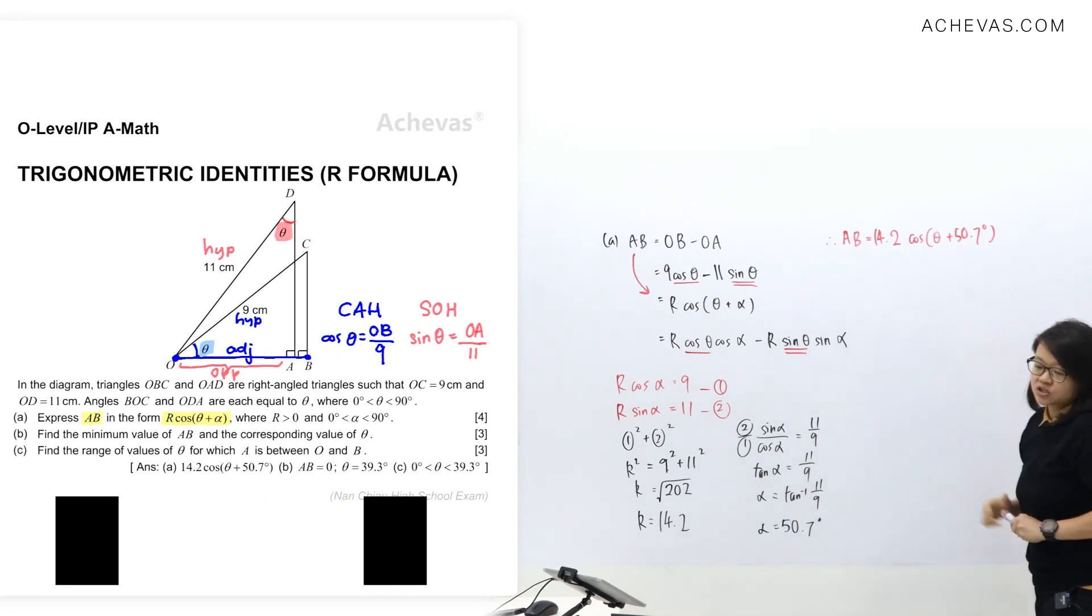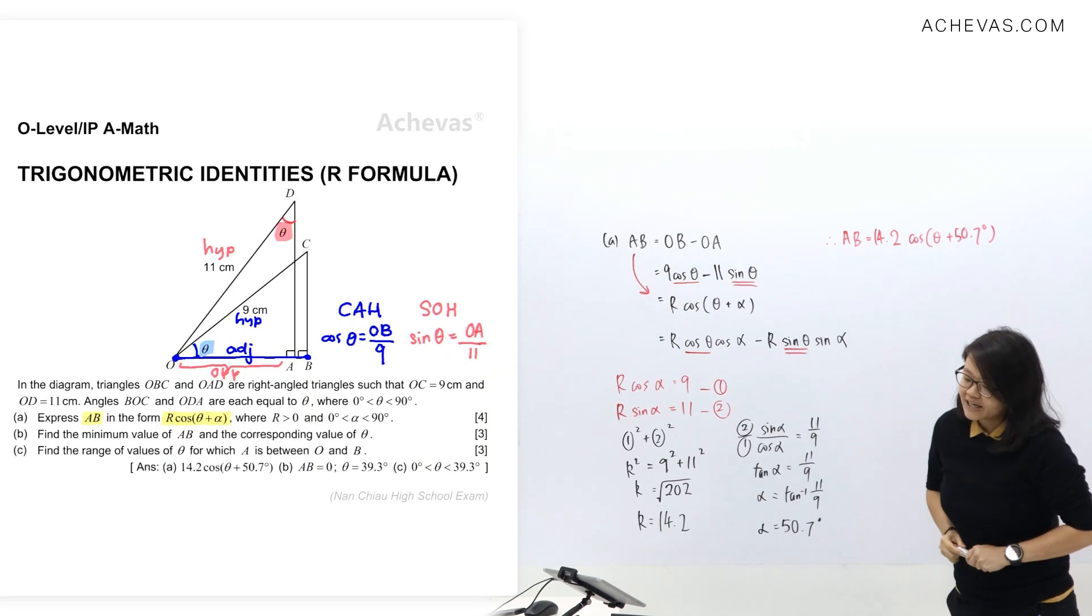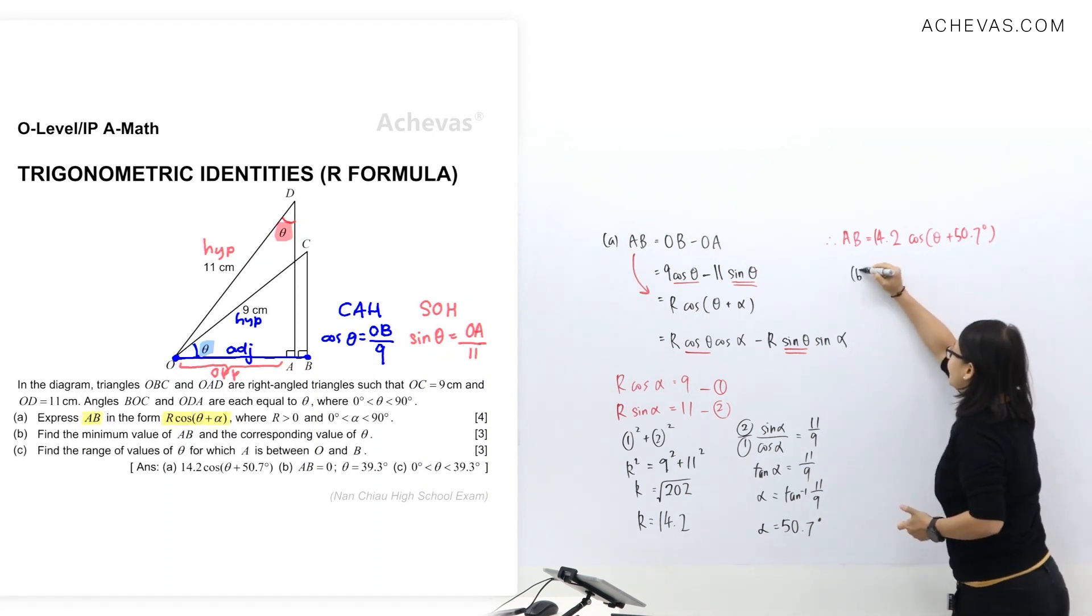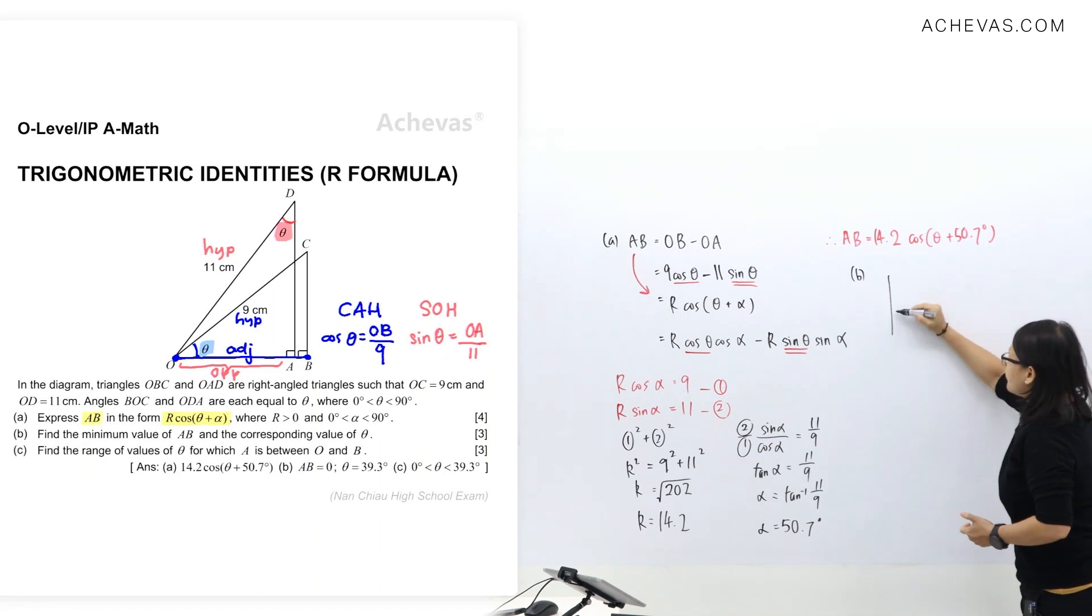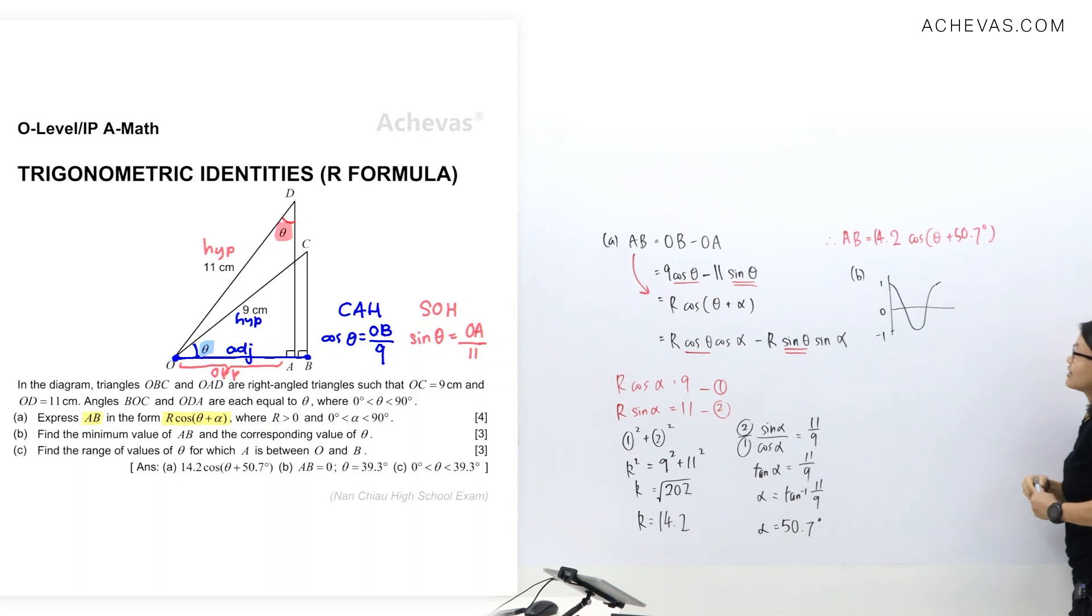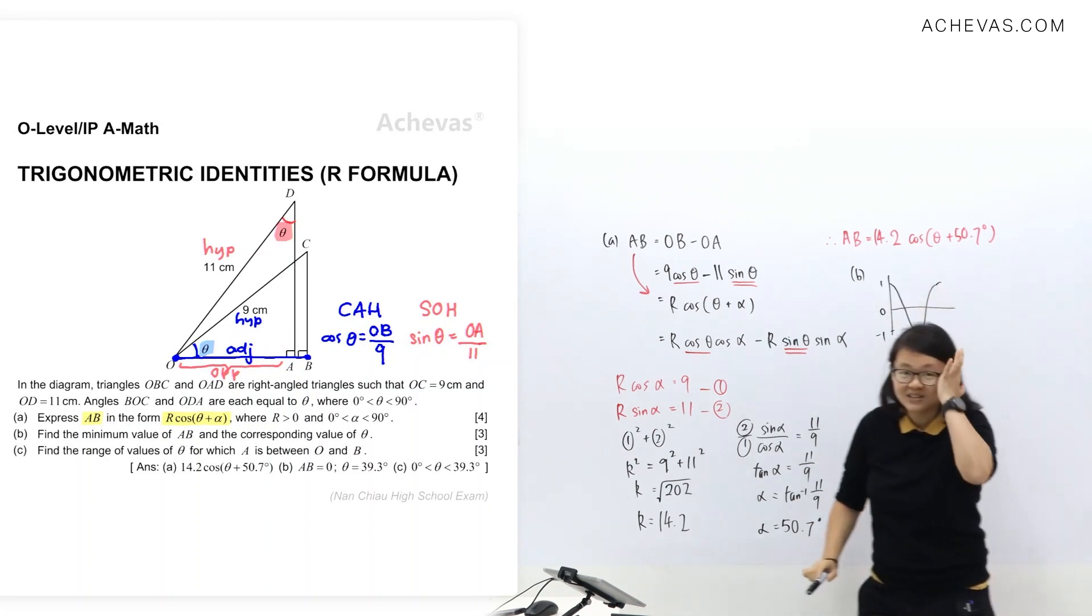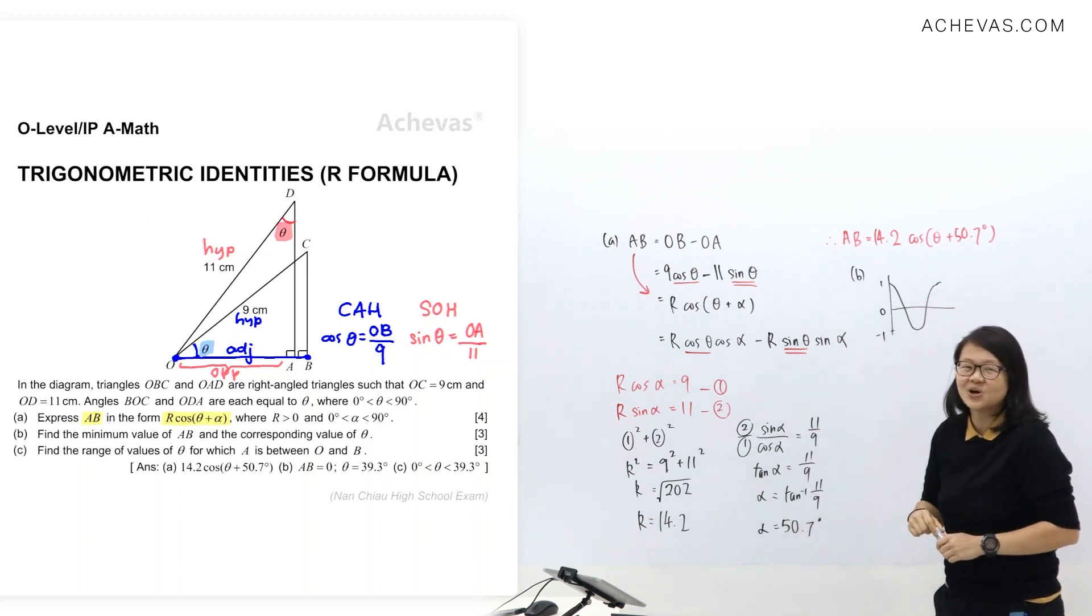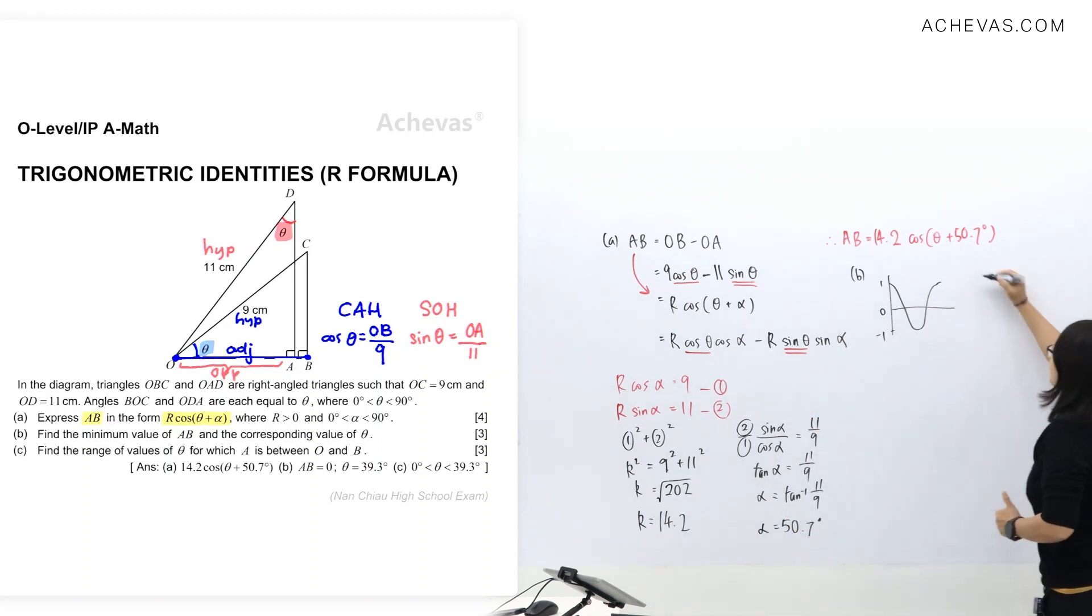Now let's take a look at part B of this question. Find the minimum value of AB and the corresponding value of theta. Now this is a bit tricky over here. Now most of the time, you will be considering the minimum of cos graph. You will take this value here, which is negative 1. Now let me warn you for this case here. If you're going to take negative 1, what happened to AB value is that you'll get a negative 14.2 and AB is the length. So for this case here, we're going to consider the minimum value for B.